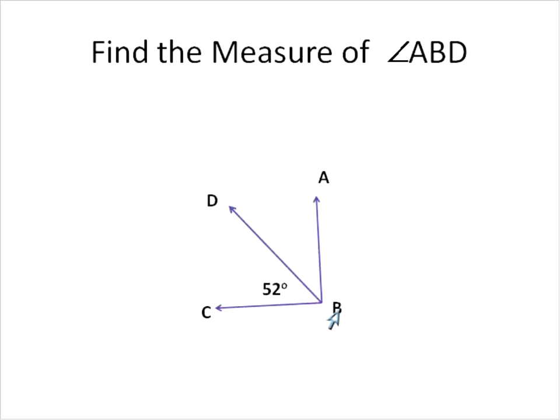We're given the angle DBC is 52 degrees and we're asked to find angle ABD. We're going to do exactly the same thing. We can draw it in here if we want, that that is 90 degrees. We know that. And what we're trying to find is that angle right there. So we'll take 90 degrees and we're going to subtract 52 degrees. And we're going to discover that 90 minus 52 is 38 degrees. That's going to be the measure of angle ABD.